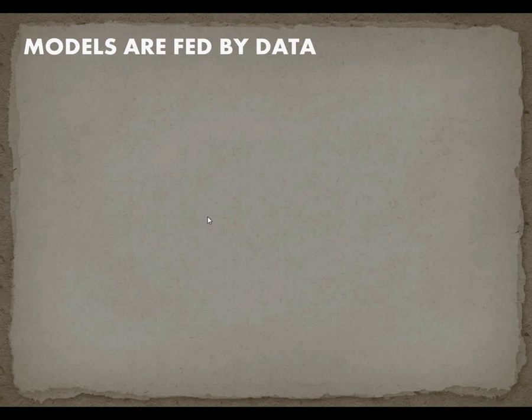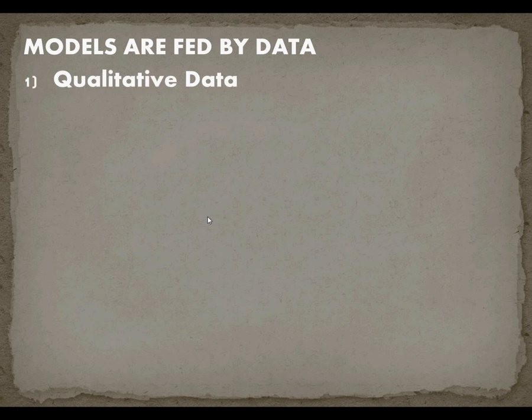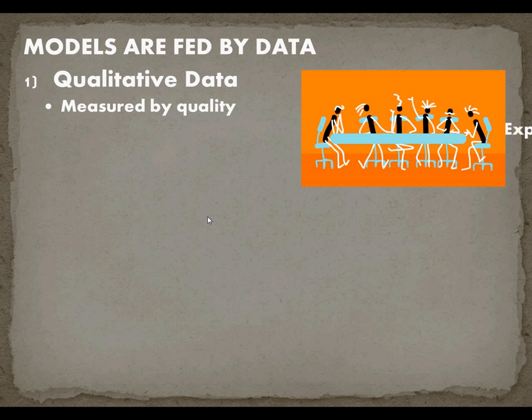Models are fed by data and there are two types of data. The first is qualitative data. This is when something is measured by quality and is difficult to capture with numbers. When my family is arguing about where we should go to dinner and we're discussing restaurant atmosphere, we're using our opinions. It's not something that's easy to justify. Ultimately it'll probably boil down to who's paying.